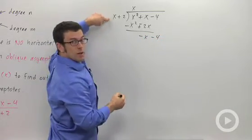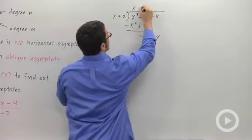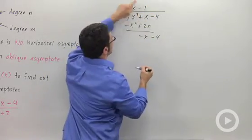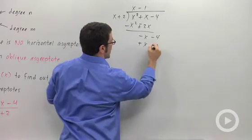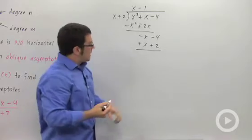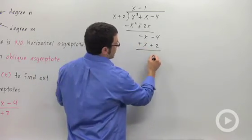Now what do we need to multiply by x to get minus x? Negative 1. So we multiply negative 1 through and we get negative x minus 2. Change the signs and add. And I get a remainder of negative 2.